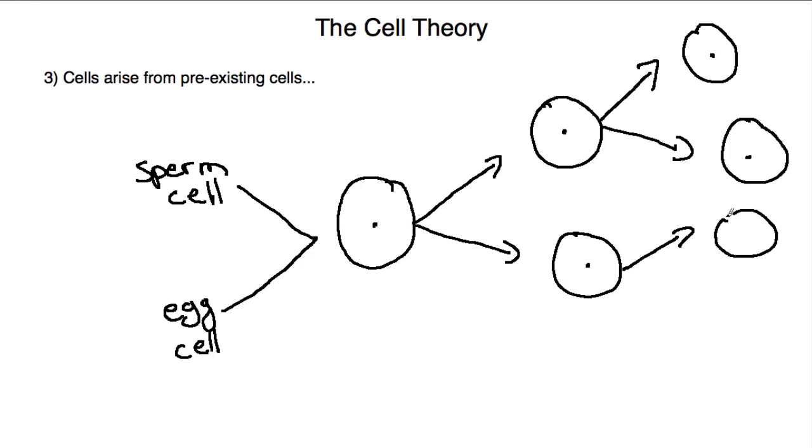And so the main point here is that cells have to arise from pre-existing cells. They cannot be created from non-living matter. They either have to arise from the fusion of a sperm and an egg cell to create the very first cell of an organism, or then cell division. And that's the cell theory for you.